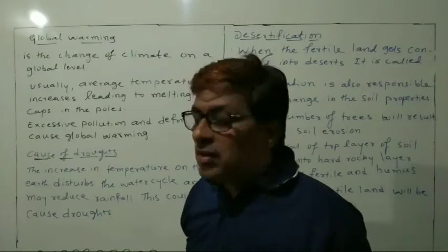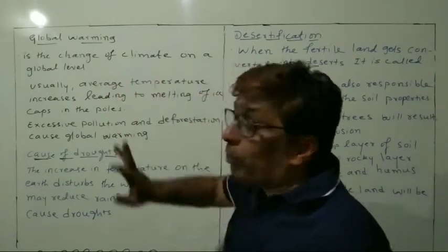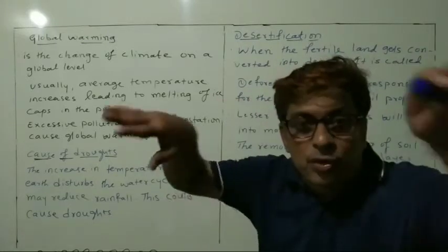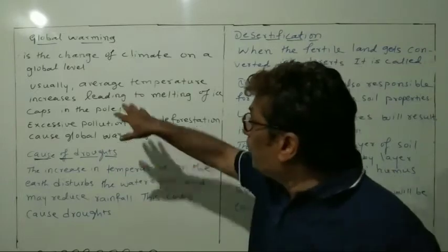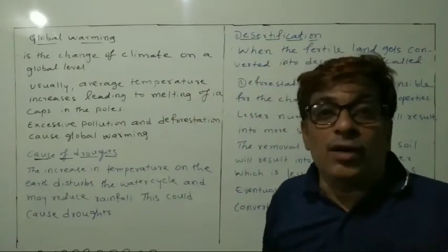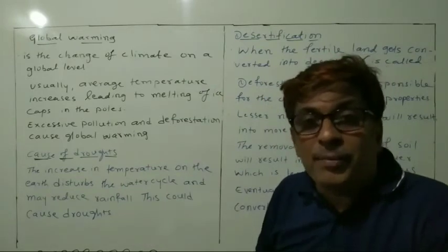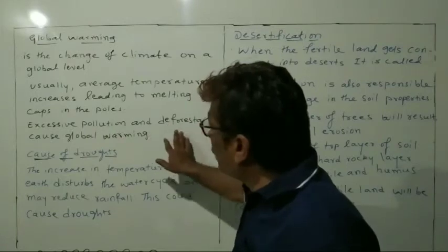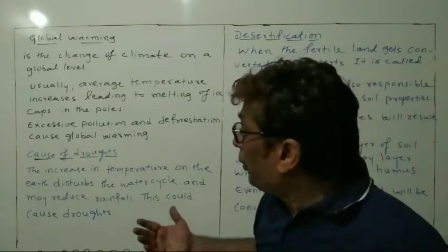Now we will see global warming. What do you mean by global warming? Global warming is the change of climate on a global level — the average temperature of the Earth's surface increases, leading to the melting of ice caps in the polar regions. Ice melting may increase water levels and cause flooding. Excessive pollution and deforestation are the reasons for global warming.